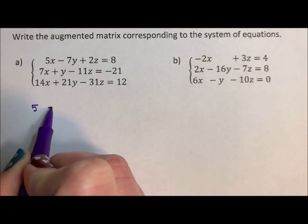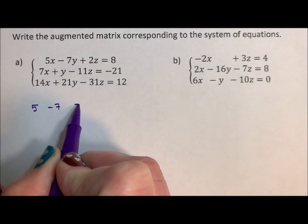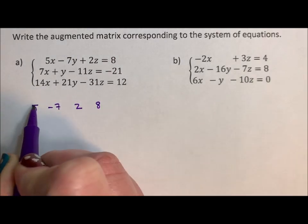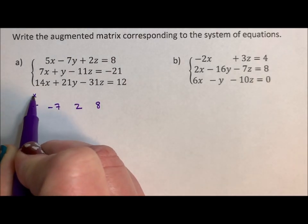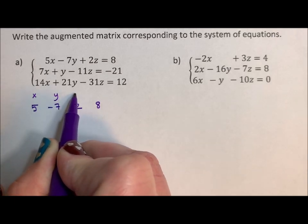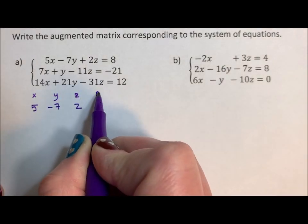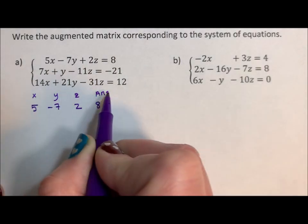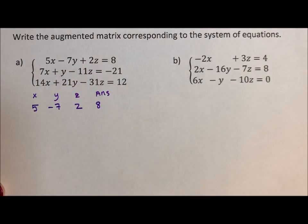The 5, the negative 7, the 2, and the 8. We have an x column, we have a y column, a z column, and kind of like an answer column. You don't need the headers, but that's kind of what it represents.